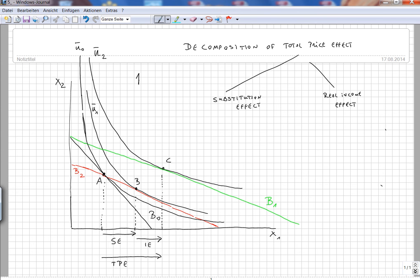If the price of the first good goes down, the budget constraint is going to turn from B0 to B1. That's important. This leads us to the new optimal bundle in point C.